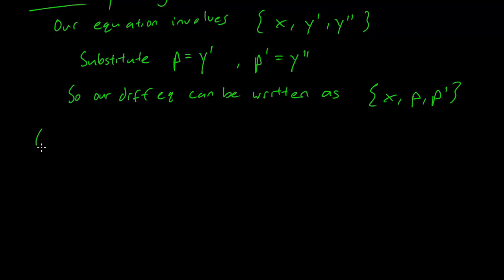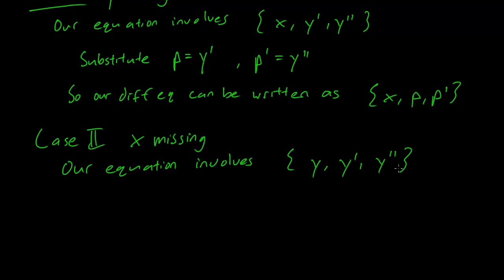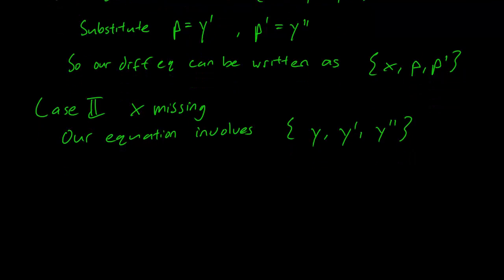In the second case, we have x missing. So our equation involves y, y', y''. This one is a little more tricky, but we have to make a substitution, p equals y'. Let's just write this down as dy/dx.